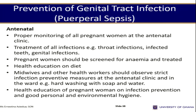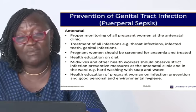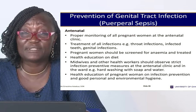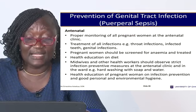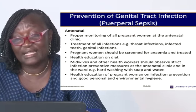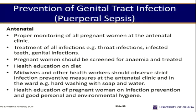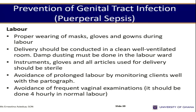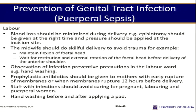To prevent puerperal sepsis, build good immunity from the antenatal level. Anything that reduces the woman's immunity can lead to puerperal sepsis. During labor, conduct delivery under aseptic conditions — everything used to care for the woman should be clean, and what should be sterile must be sterile. Avoid prolonged labor, as once the membranes rupture, ascending infection can occur.